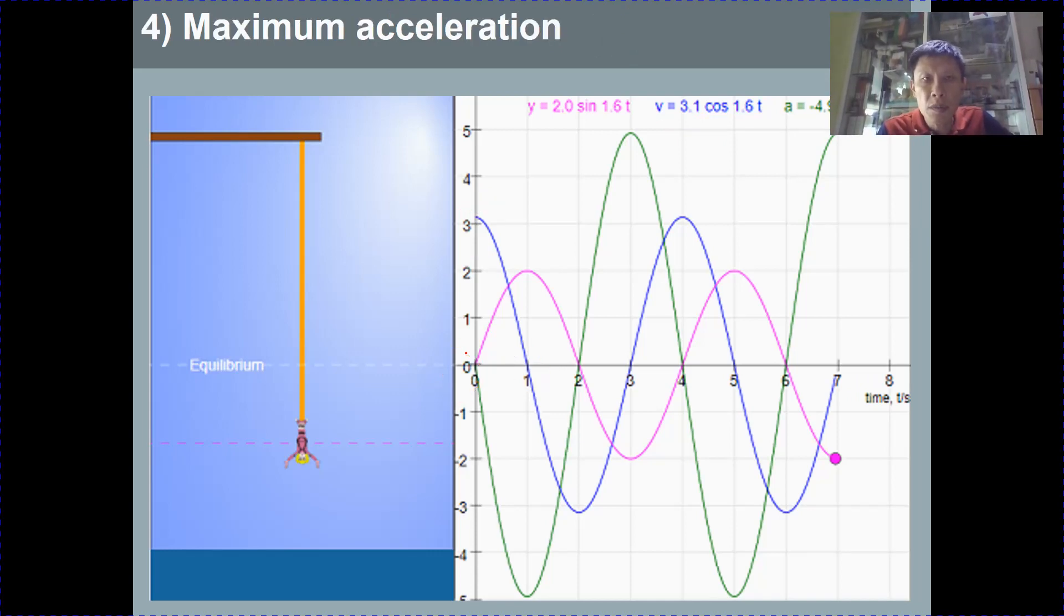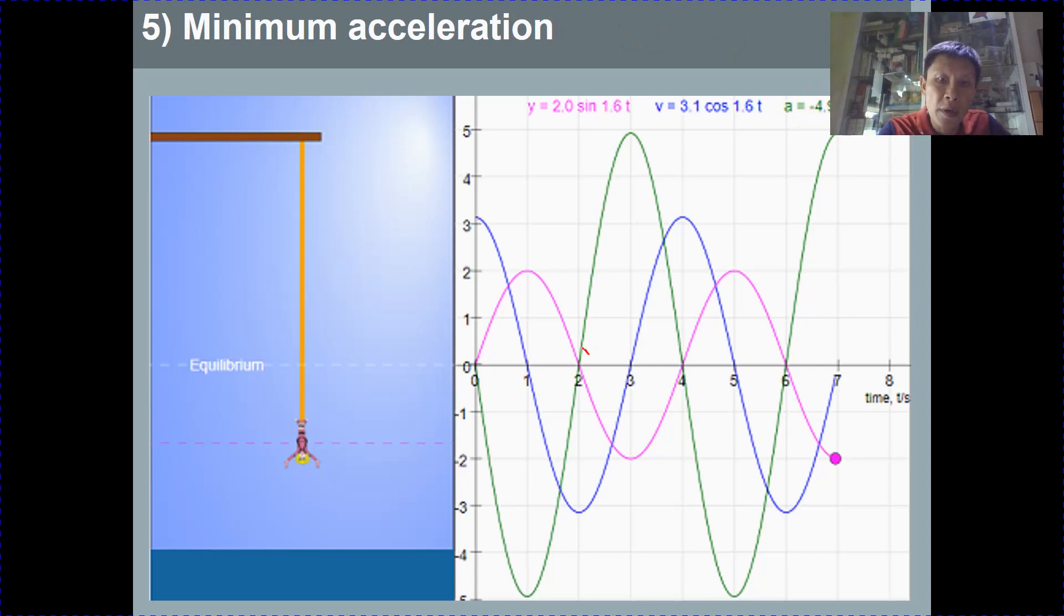Maximum acceleration, if you differentiate the velocity time graph, you get minus 4.9 from this expression, and is given by omega squared x0. This will be the maximum acceleration. And for minimum acceleration, sinusoidal graph, the minimum value will always be zero.